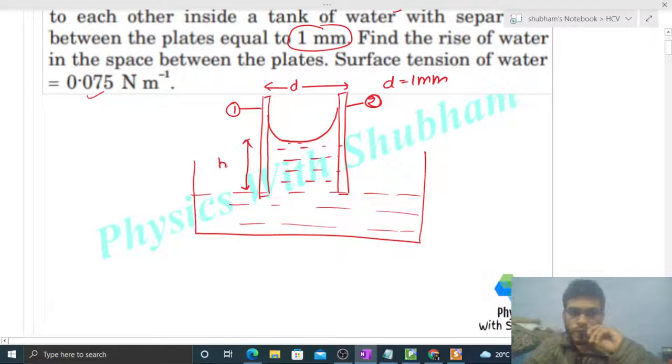Let's say h naught. So we have to find out the value of h naught. How to find it out? There's a direct formula for this. If you directly remember the formula, that is absolutely fine. If you don't remember, you can still do it. The concept is that the weight of the water that rises will be balanced by the surface tension force.